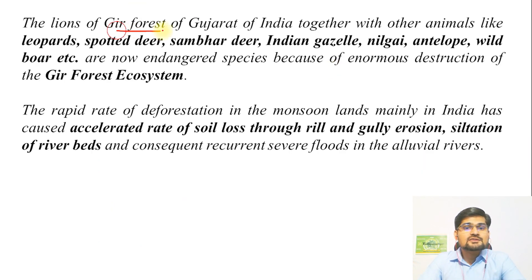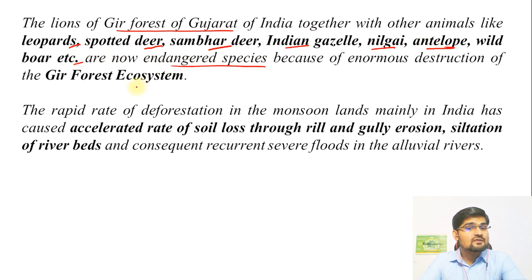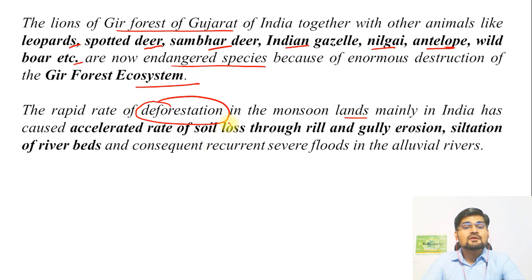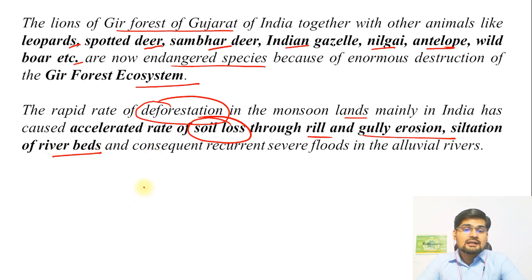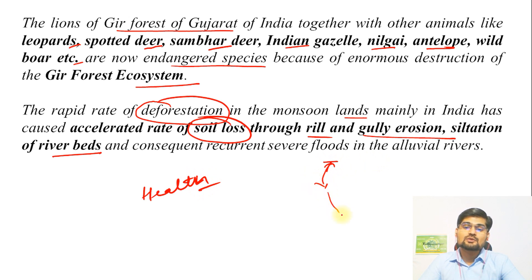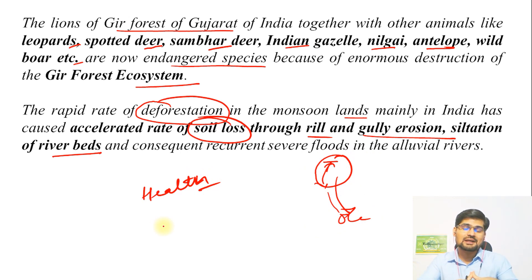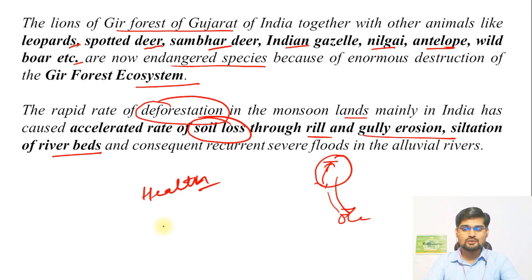The lions of the Gir Forest of Gujarat, which was in the news recently, along with other animals like leopards, spotted deer, sambar, Indian gazelle, nilgai, antelope, and wild boar — all are part of endangered species because of the destruction of the Gir Forest ecosystem. Rapid deforestation in the monsoon lands has also led to accelerated rates of soil loss and soil erosion. Every year we see rill and gully erosion and siltation of riverbeds. The health of our rivers is at stake — and since rivers are connected to the ocean, it creates a huge chain of impacts across the entire ecosystem, from local scale to global scale.